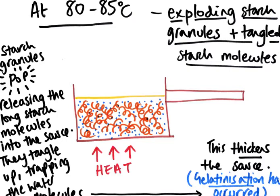When we have a sauce recipe, it usually advises us to keep the sauce at a simmer for a few minutes. When we can see those bubbles in the sauce, we know we're getting near to 100 degrees. What we're doing is ensuring that there are no unexploded starch granules — that gelatinisation has been completely finished — so that when we serve the sauce, we don't have any floury texture left by those unpopped starch granules.